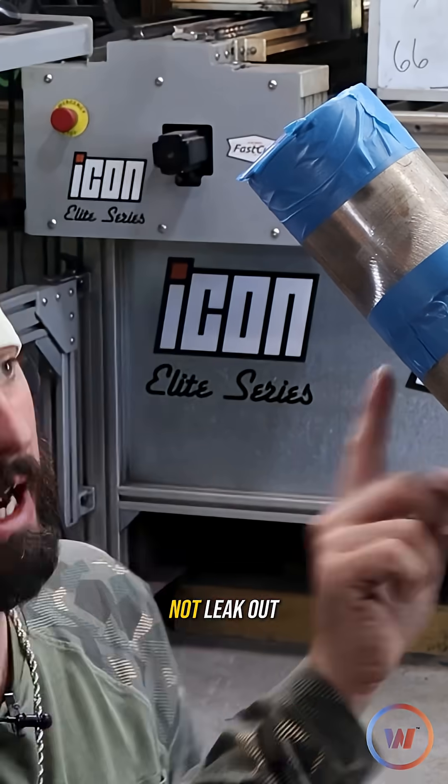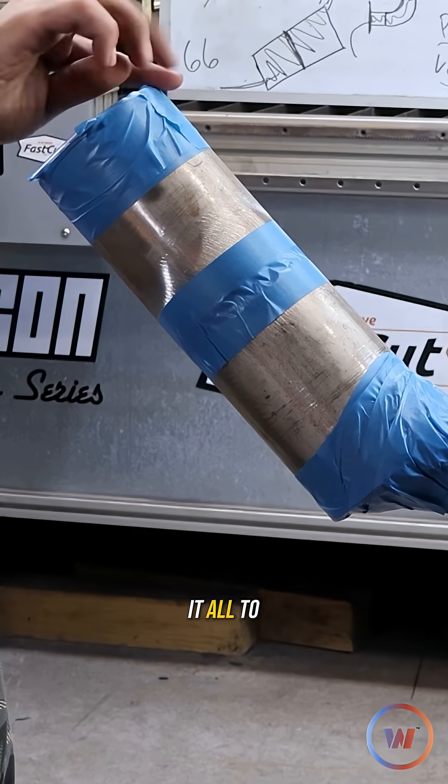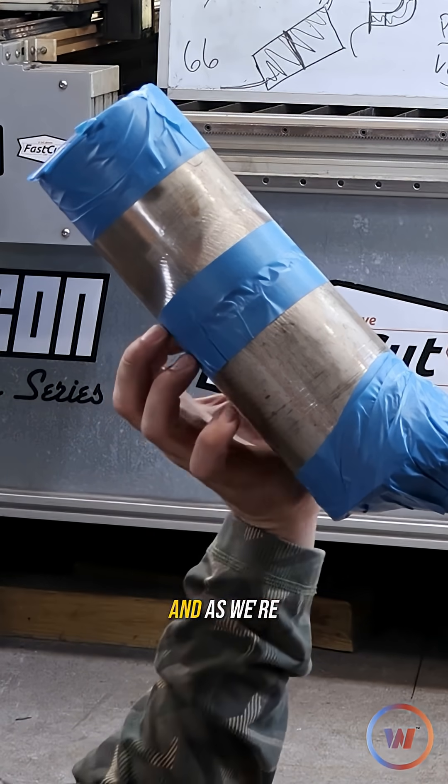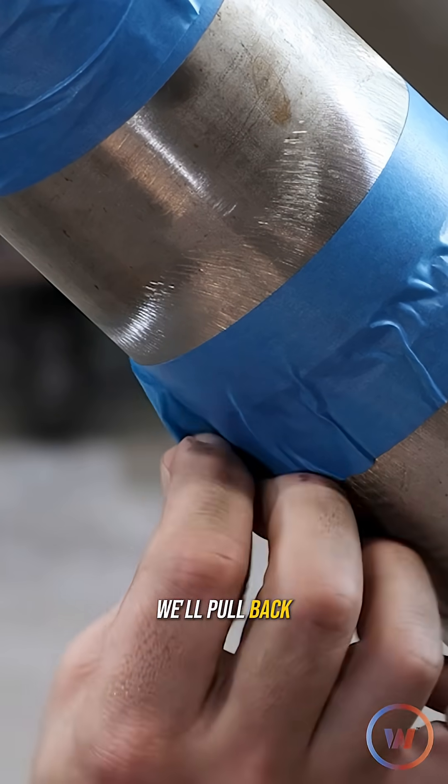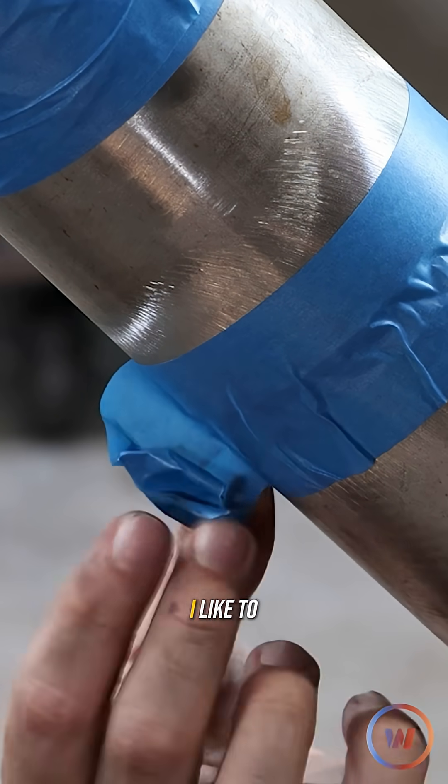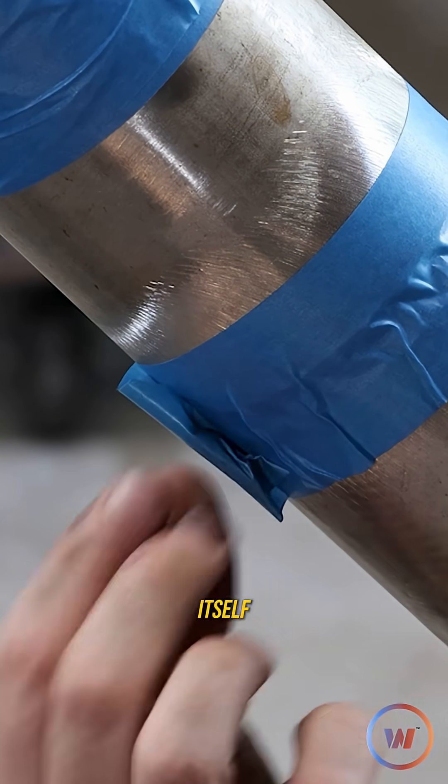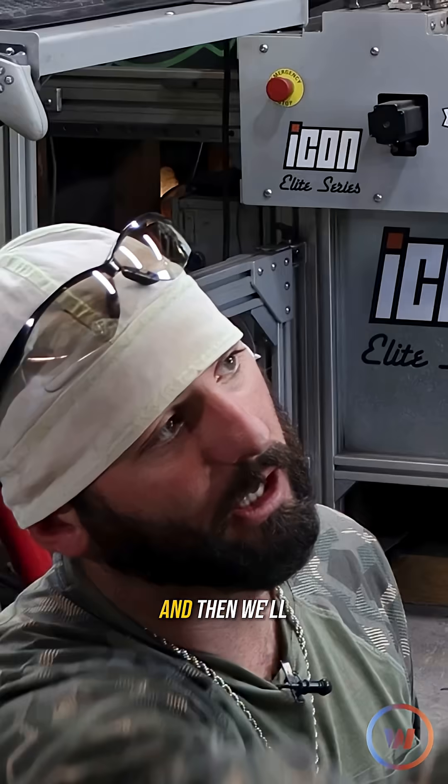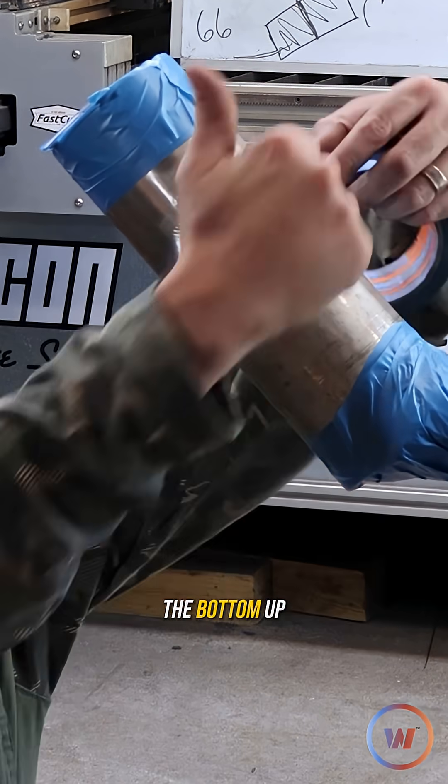We're going to close this up, not leak out at the bottom, and we want it all to vent out of the top. So we'll give it a second, and as we're ready to weld, we'll pull back the tape in the direction that we're welding. I like to roll it back on itself so it doesn't stick to my glove, hopefully, and then we'll weld from the bottom up.